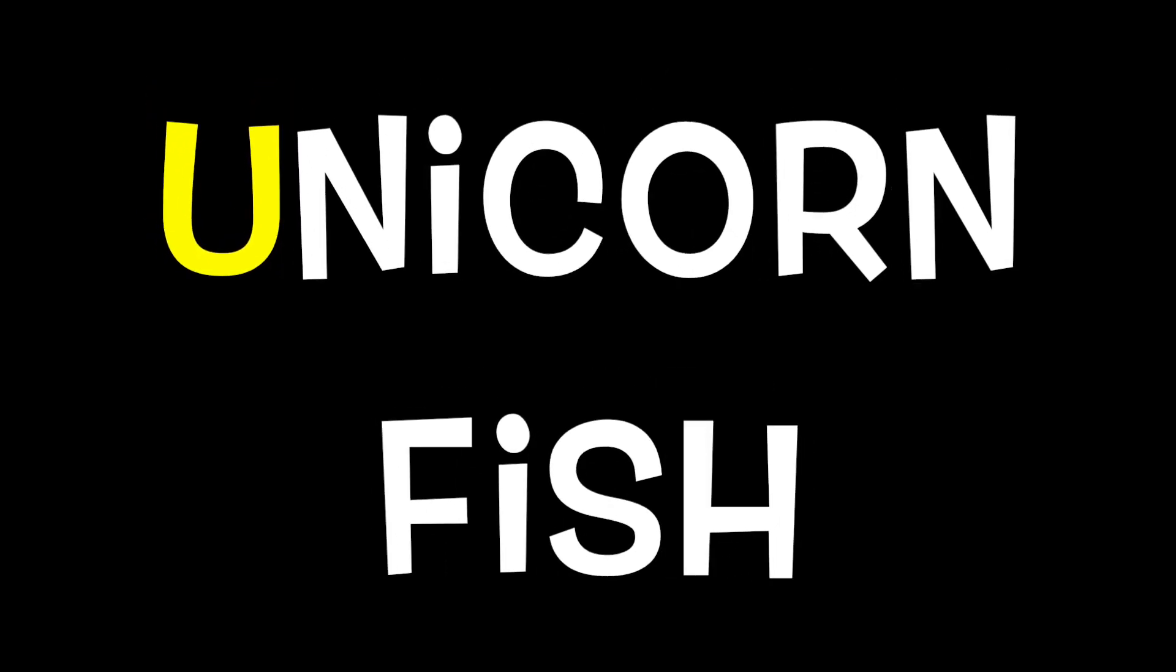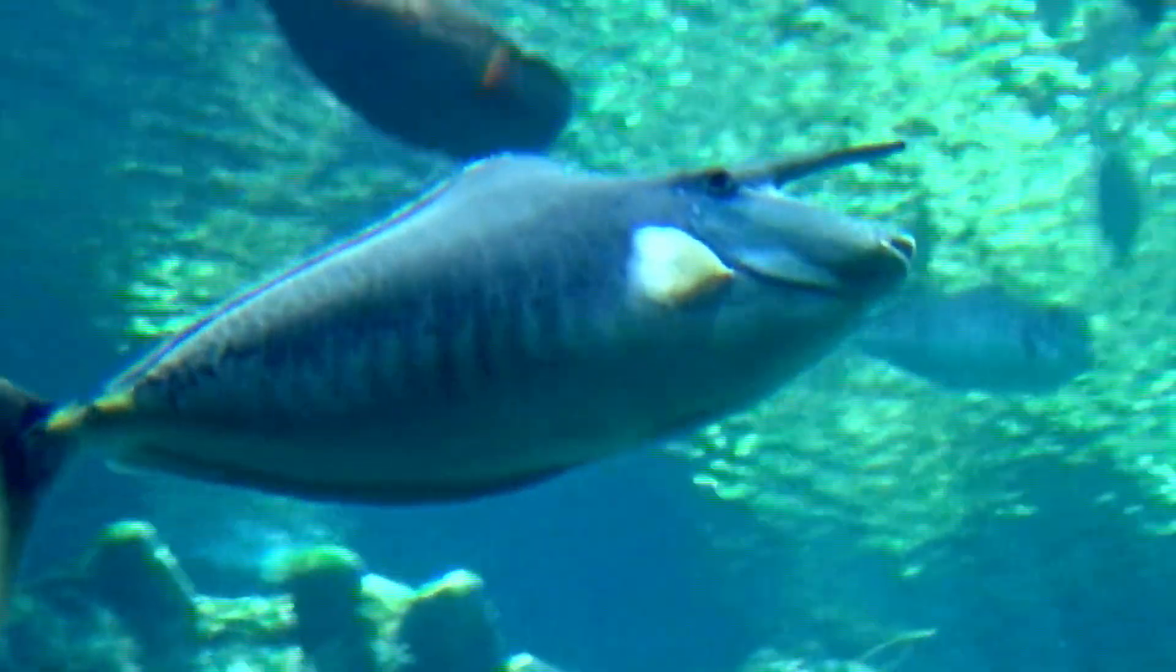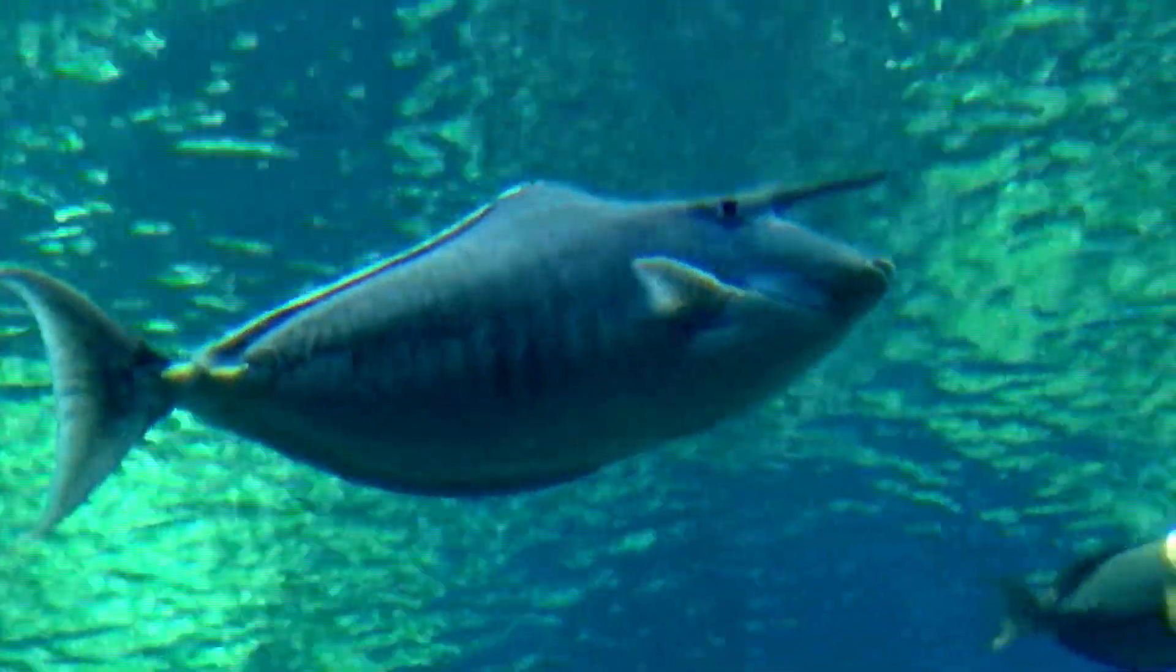U is for Unicorn Fish. V is for Veil Angelfish.